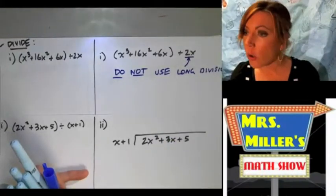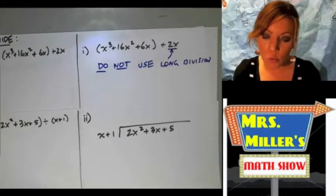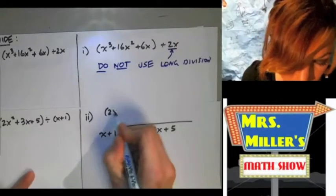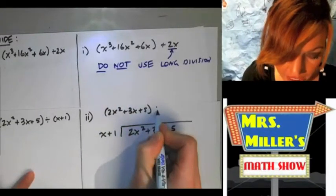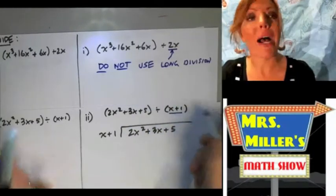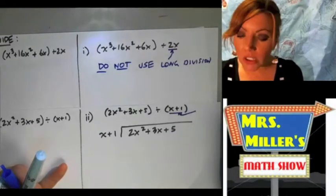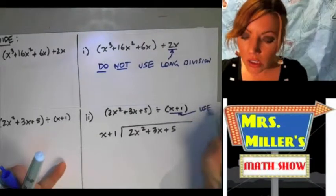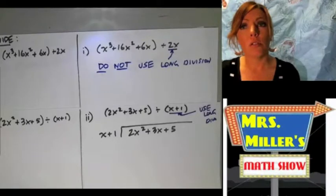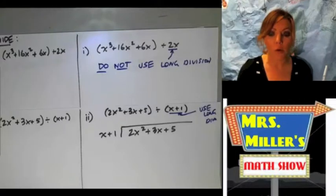When you have something being divided by a monomial, you do not use long division. But in this next one we've got 2x squared plus 3x plus 5 divided by x plus 1, and now we have not a monomial but a binomial — two terms. This is where, when you're dividing by a binomial, you want to use long division. We're going to focus our lesson today quite a bit on the long division stuff, but I don't want you to forget about this other way.